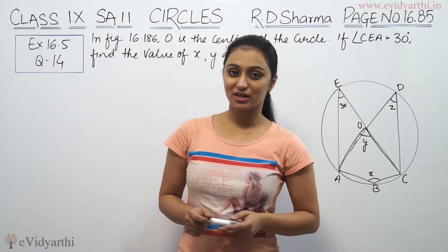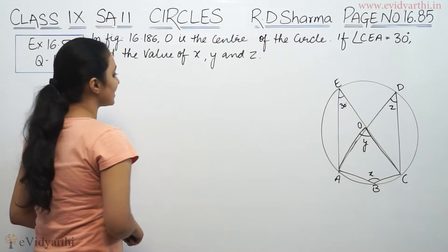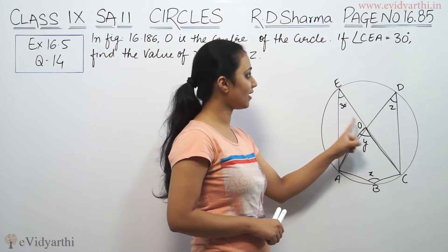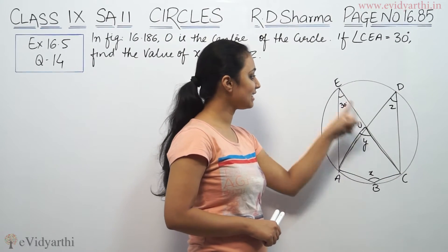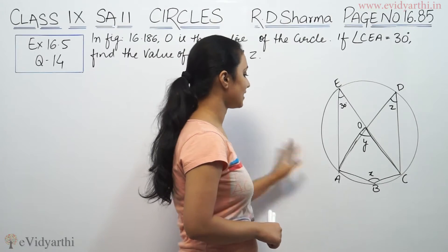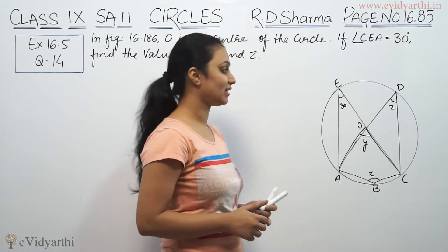Page 16.85 from RD Sharma. This says in figure 16.186, O is the center of the circle. Angle CEA is 30 degrees. Find the value of X, Y, and Z.